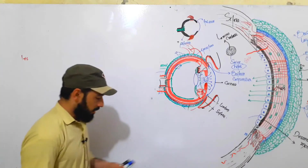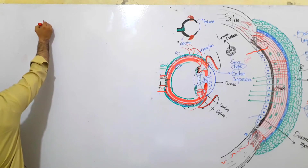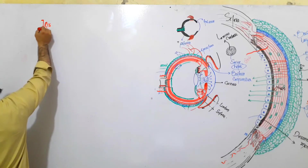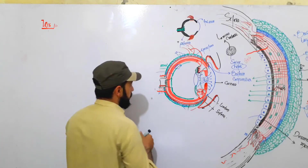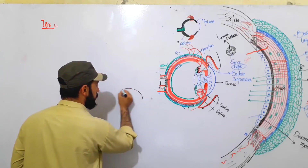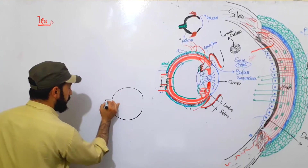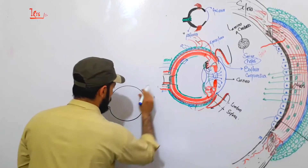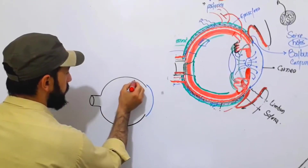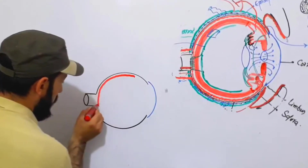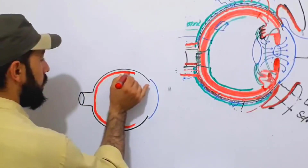Let's look at the structure of the iris. First, a brief introduction and its exact location. You can see in this diagram — let me draw a clean diagram to show exactly where the iris is located. If this is our sclera, the outer fibrous layer of the eye, then in front of the sclera we have the cornea. Then we have the second layer, called the choroid layer or vascular layer — the nutritive layer of the eye.